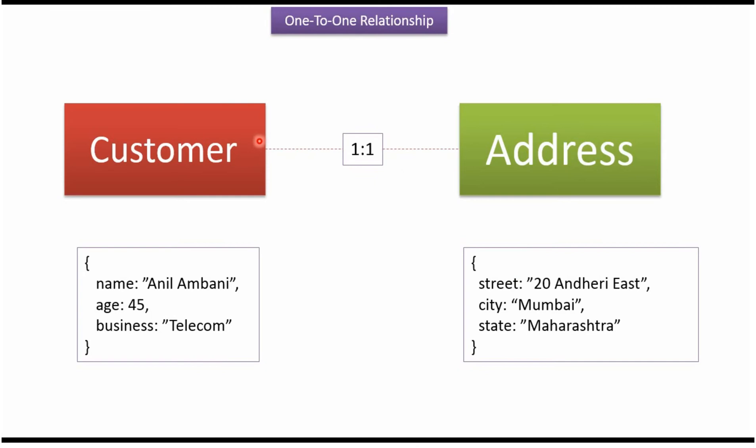I want to establish one-to-one relationship between this customer and address. We will see how to do it in MongoDB, and there are two ways to do it. The first one is embedding and the second way is referencing.